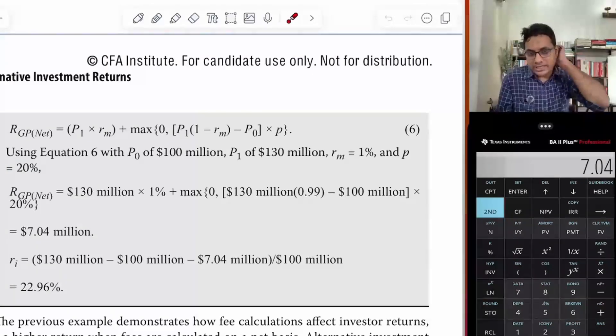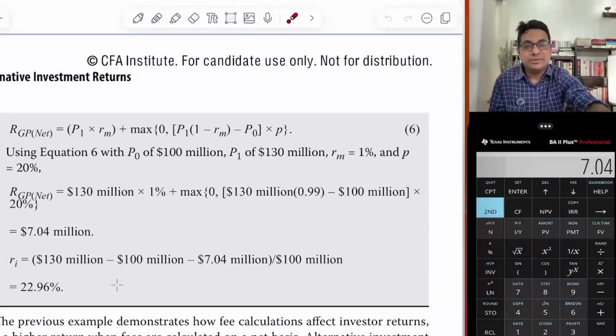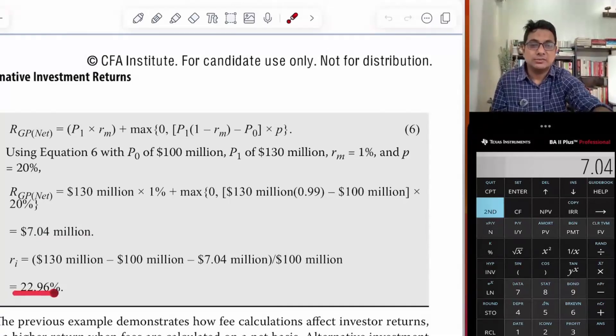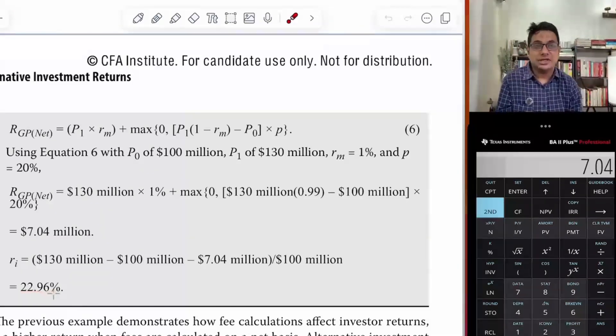So 7.04 will be the GP's return. Therefore, 30 minus 7.04 gives us 22.96, which will be the investor's net return.